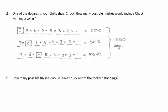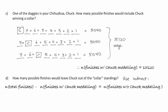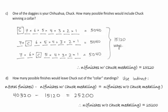How many possible finishes would include Chuck not winning a medal? We could calculate the case where Chuck finishes 4th, plus 5th, plus 6th, and so on down to 8th. But it's easier to use an indirect method. We take the total number of finishes possible and subtract the number of ways where Chuck does win a medal. So 40,320 minus the number of finishes where he wins a medal gives us 25,200 ways that Chuck does not win a medal. If you'd like to verify, try it the long way and confirm it's exactly the same.